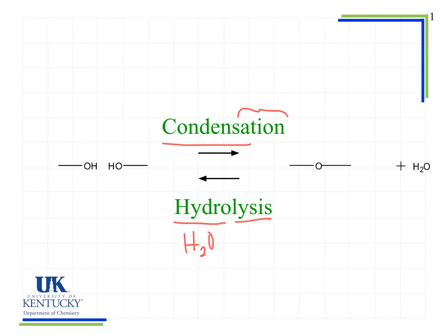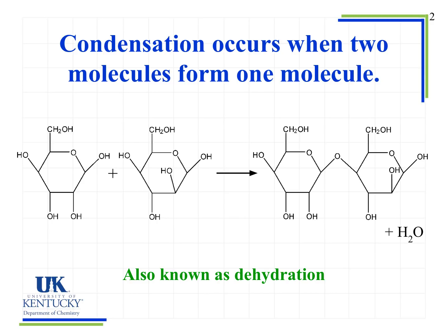Condensation is also known as dehydration. Two smaller molecules form one larger molecule, and water is always a product. What we look for are the OH groups. Condensation can happen in many places in a molecule if there are multiple OH groups. Some positions are preferred over others, but all we need to know is that two molecules with OH groups can be combined into a single molecule.